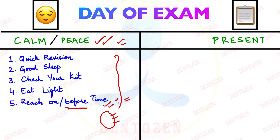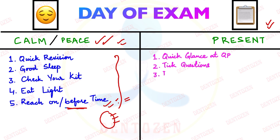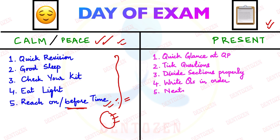Coming to how to present your paper: time management is first and most important. The moment you get your question paper, take a quick two to three minutes to glance at it. Don't panic if you don't know some questions — take the compulsory questions and the questions from given choices. Then divide the sections properly in your answer sheets, and write the question numbers clearly in the order they appear in the question paper.